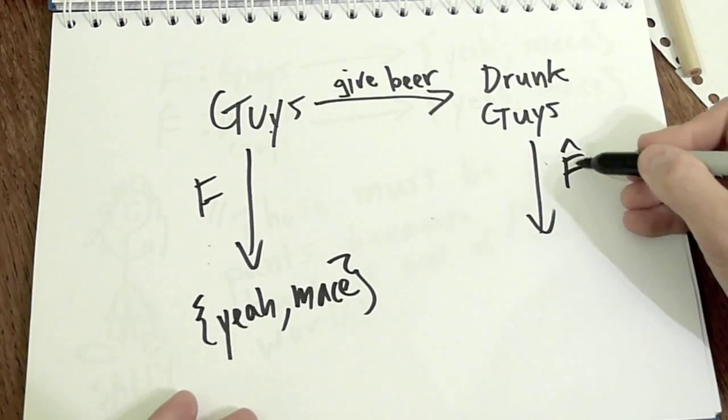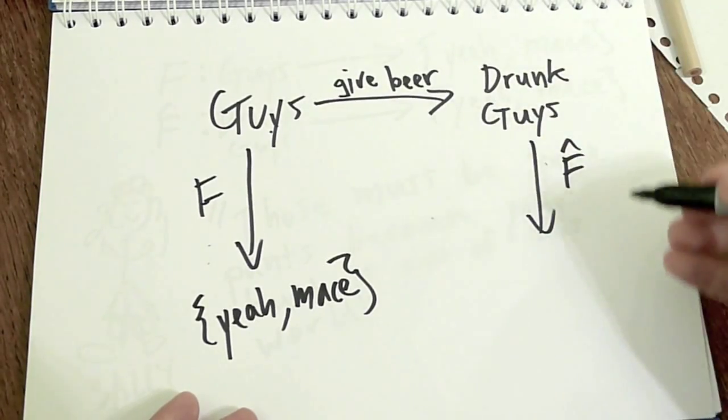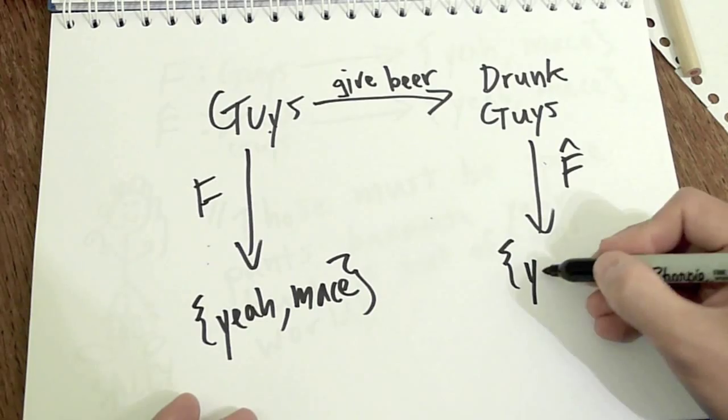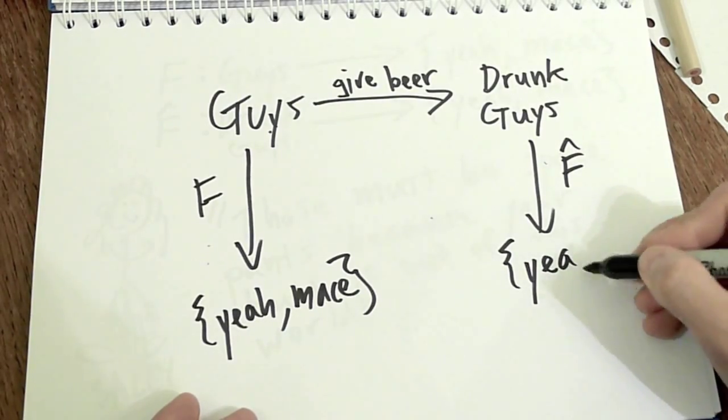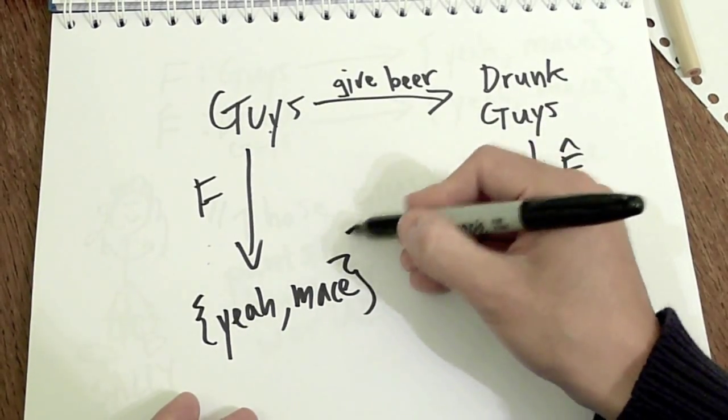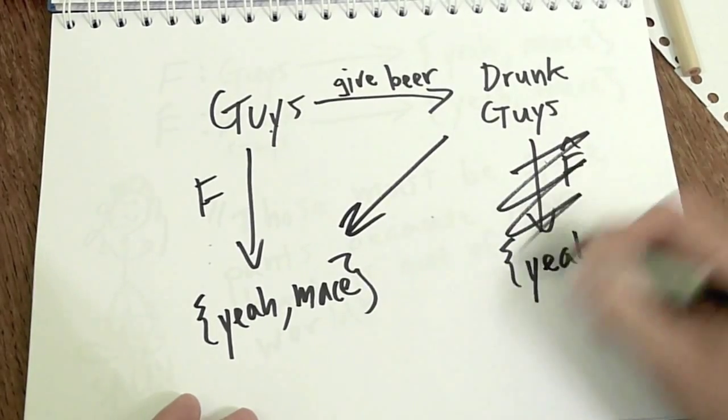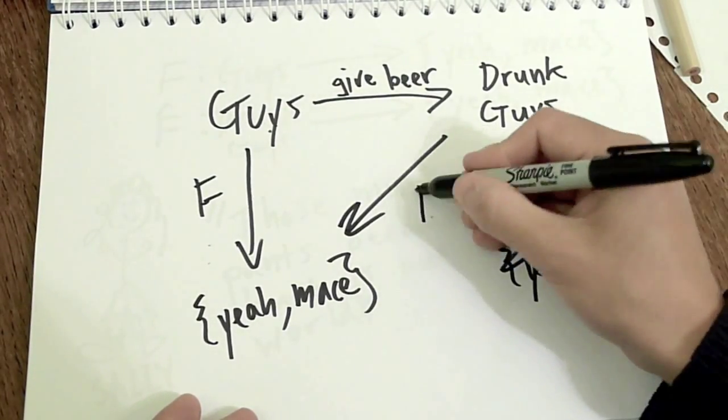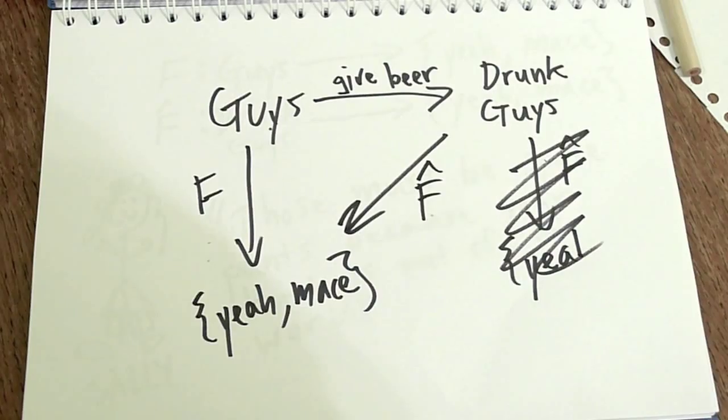Of course, it's a different map because it acts on a different space. But the reactions are the same. Yeah. Oh, sorry. But the reactions are the same. So, it's a triangle actually.